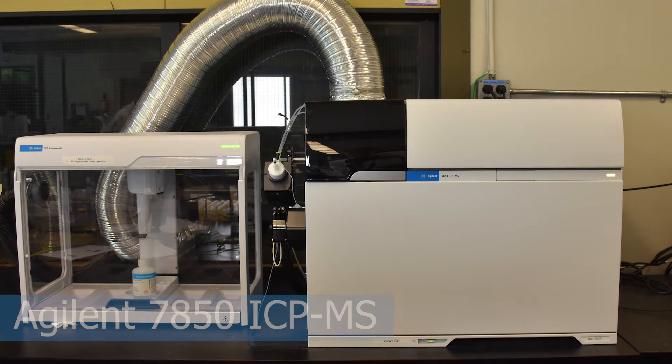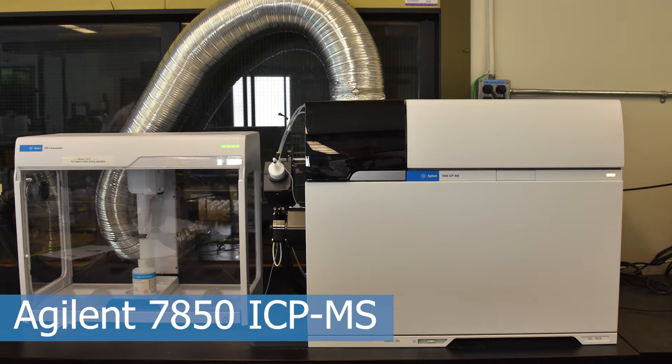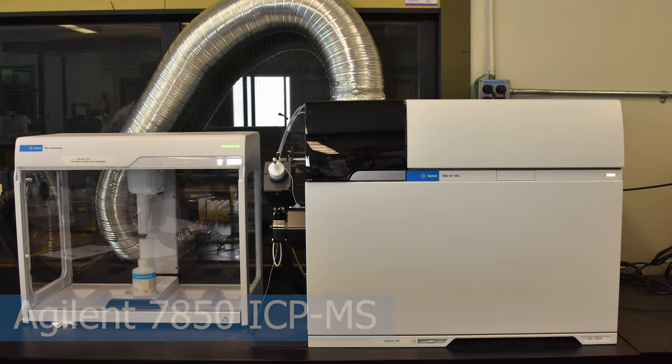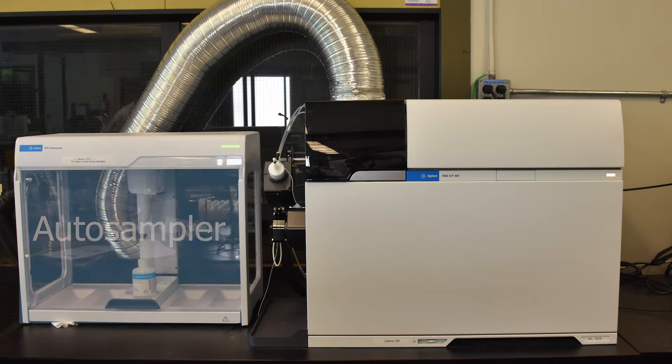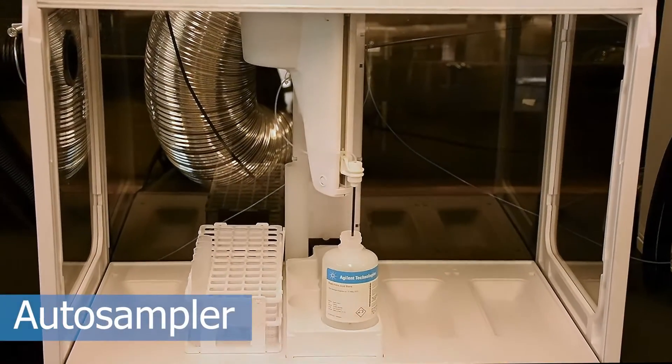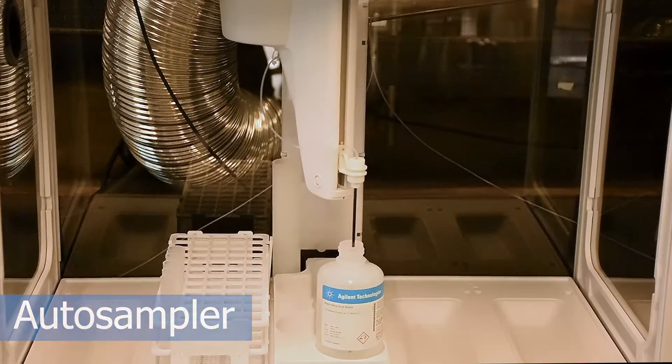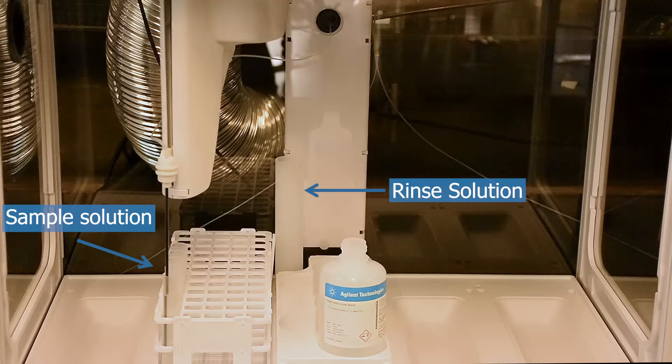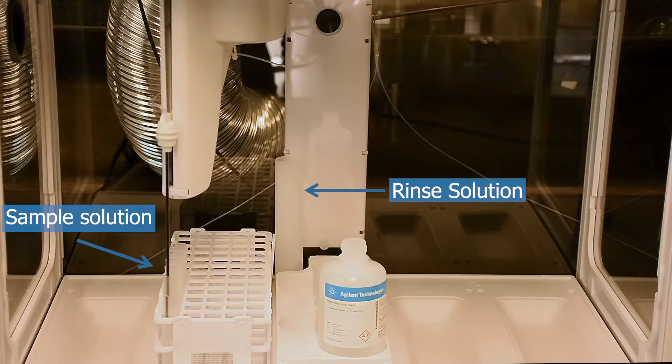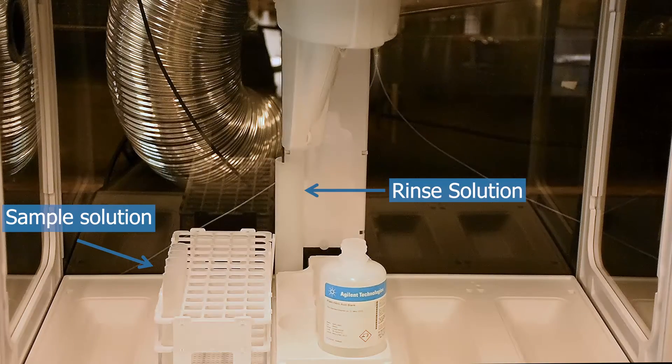The instrument that we are looking at is the Agilent 7850 ICP-MS. We will begin by looking at the autosampler. Samples are loaded into the autosampler, and a motorized sampler arm draws the solution into the instrument. A rinse solution is used between samples to limit cross-contamination.